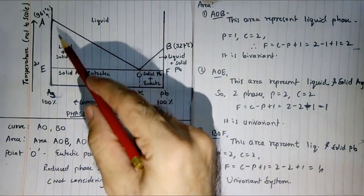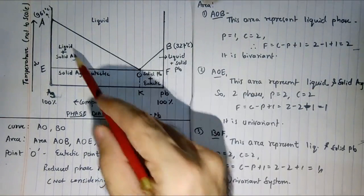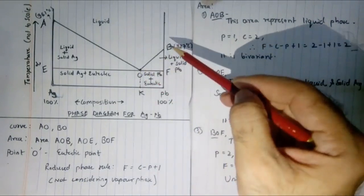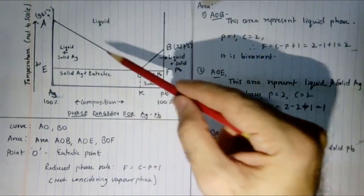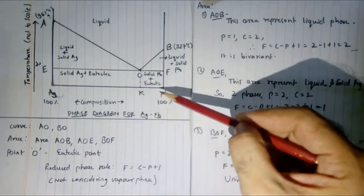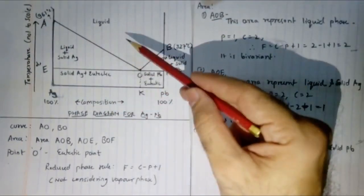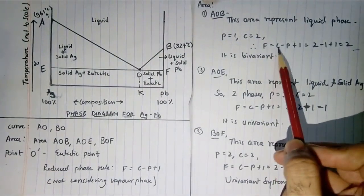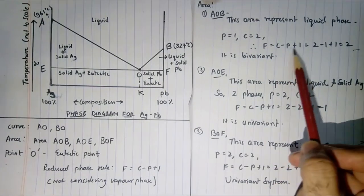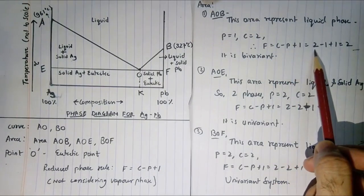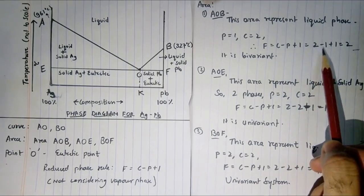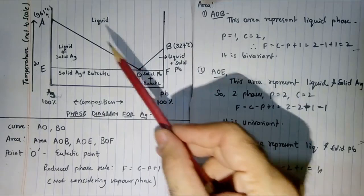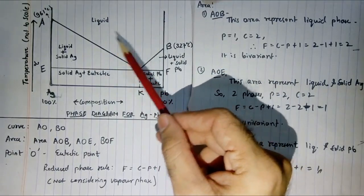Now let us discuss the areas. The area above curves AO and BO (area AOB) contains liquid silver and lead in liquid form — one phase, two components. Applying the reduced phase rule: f = c − p + 1 = 2 − 1 + 1 = 2. This is a bivariant system, meaning you require at least two variables to specify or define any point in this region.